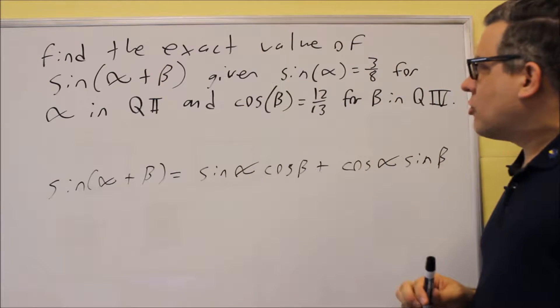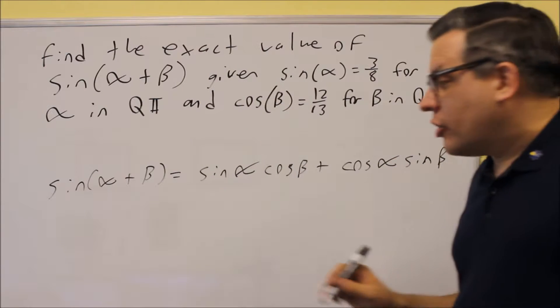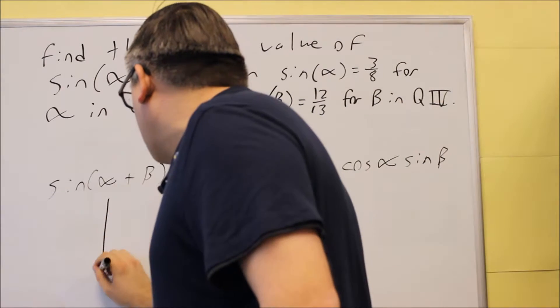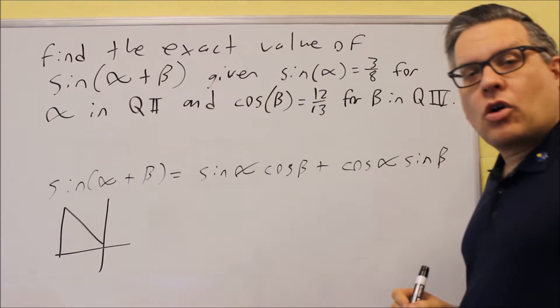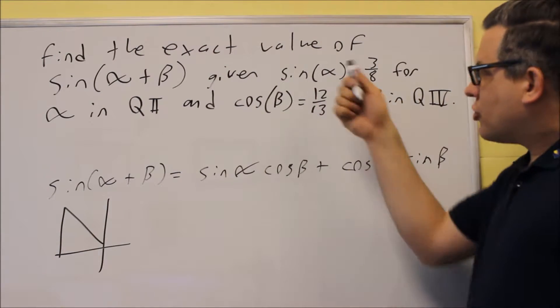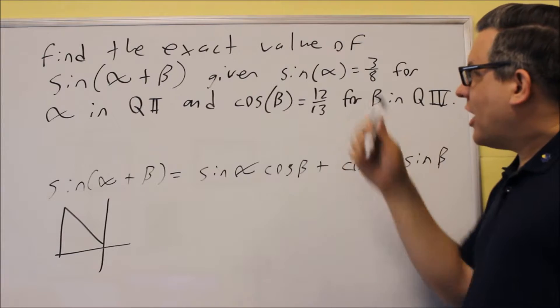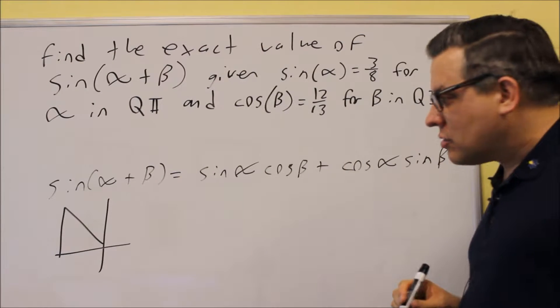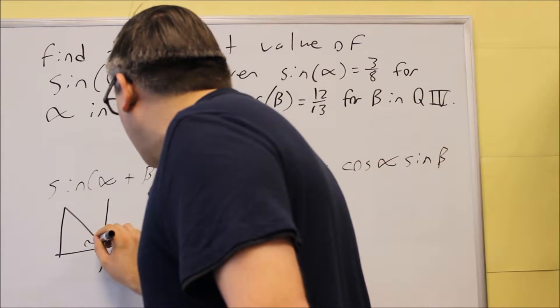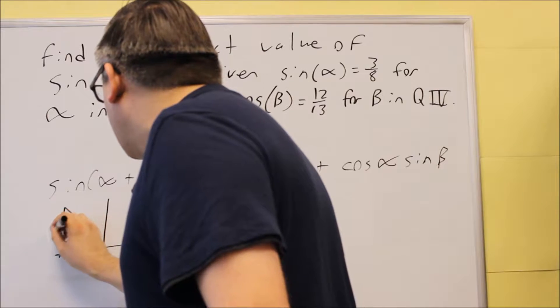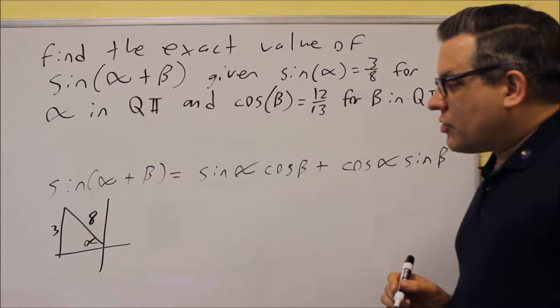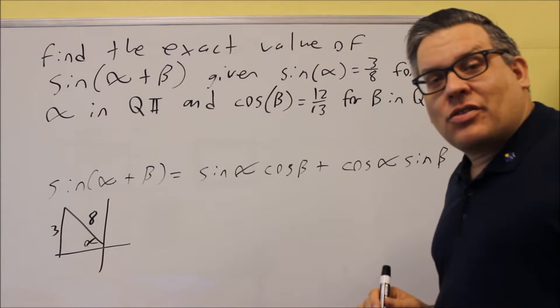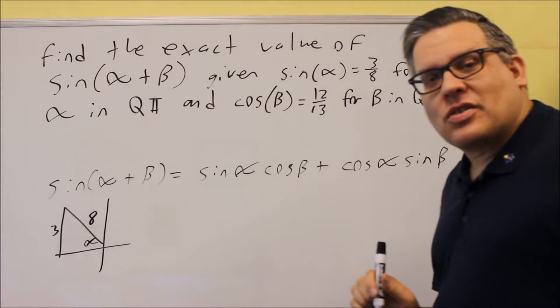So first, sine alpha is 3 eighths, and we're in quadrant number 2. So what I'll do here is I'm going to draw a triangle in quadrant 2, and I'm going to use my definition for sine, that's opposite over hypotenuse, to do that. So here's alpha. Opposite is 3, and hypotenuse is 8. So I need to use Pythagorean theorem to figure out the missing side there.